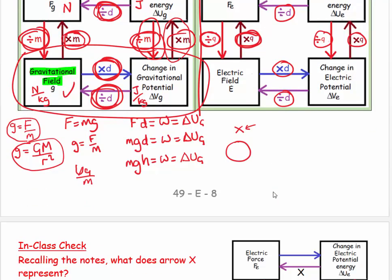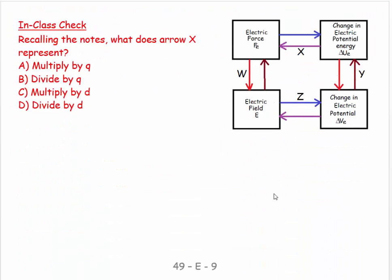Let's have a look at this question. This is basically getting you to recall this diagram. It says, recalling the notes, what does the X stand for? If you look, I've got a W, I've got an X, I've got a Y, I've got a Z. You've got to look at the two things. This is electric force, and this is change in electrical potential energy. If you took a force and multiplied it by a displacement, you'd get joules. But that's not the arrow we're on. We're on the arrow going the other way, so this will be divided by a displacement.